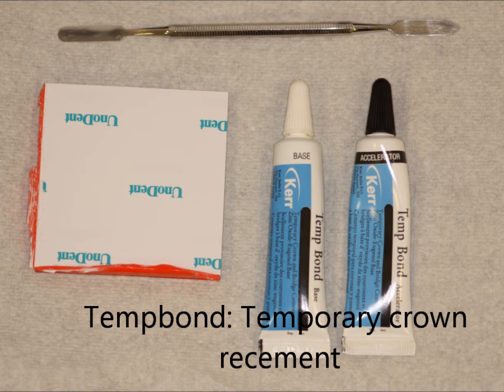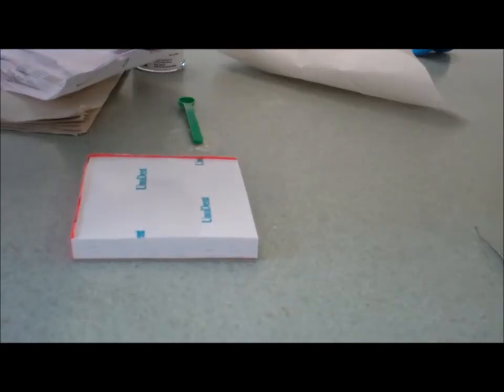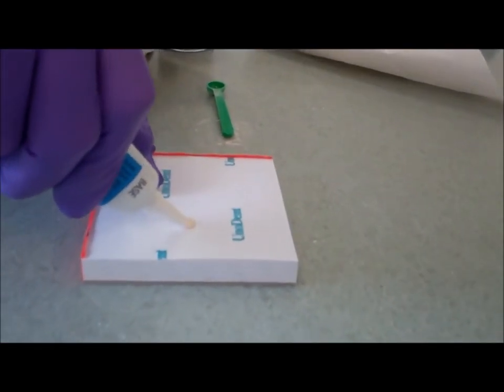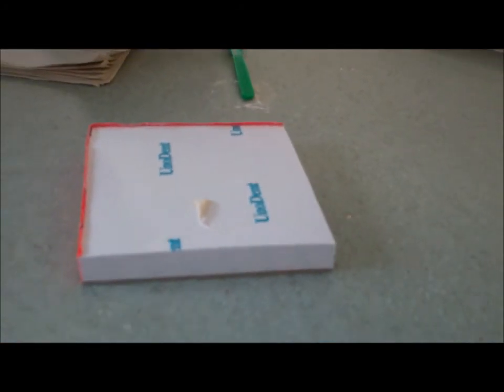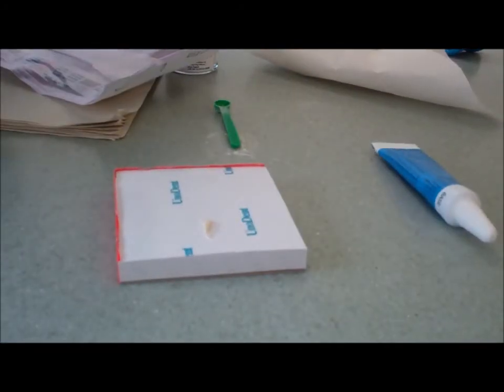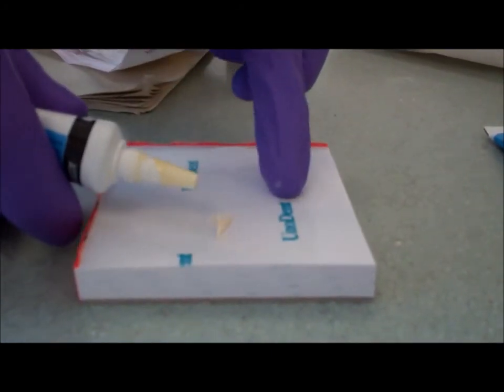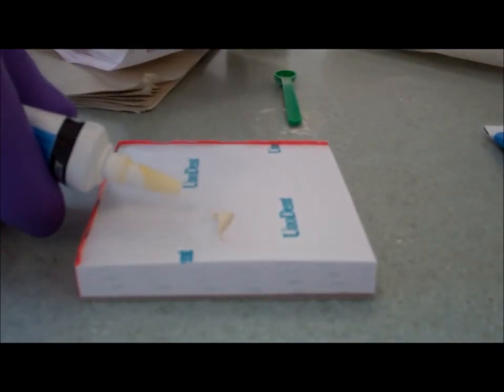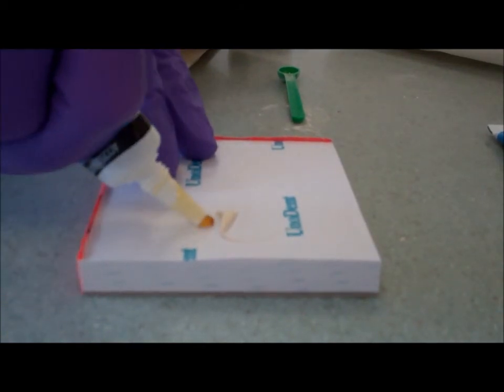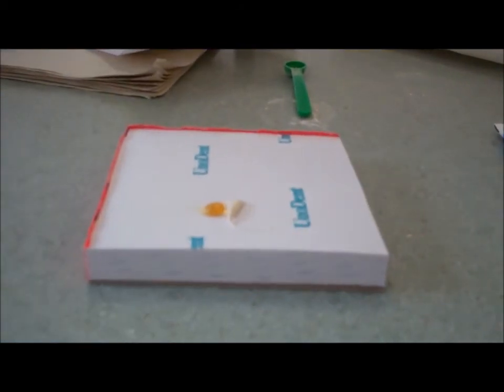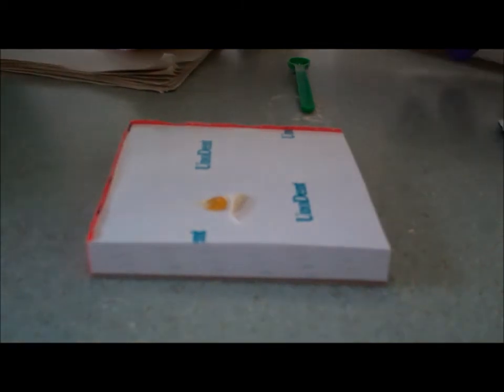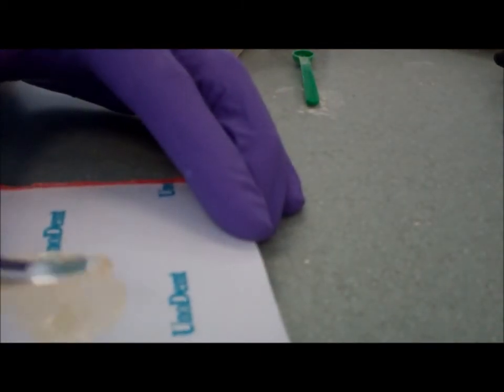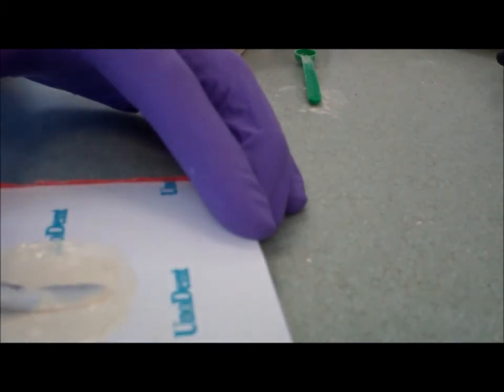Temp bond is a temporary crown re-cement material and it's the only cement we would use to temporarily re-cement crowns. Again it's two liquids, a base and a catalyst. Put equal amounts of each onto the pad. Don't make sure the nozzle of one end doesn't touch the other otherwise you'll get a setting reaction happening in the tube. They are different colors so you're just going to use your spatula to mix them up until they're a uniform even color.